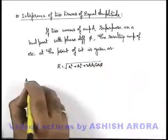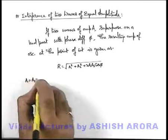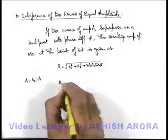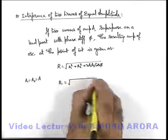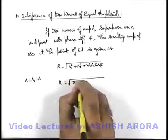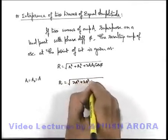Here if we take A1 is equal to A2 is equal to A, then the value of R will be root of 2A square plus 2A square cos φ.